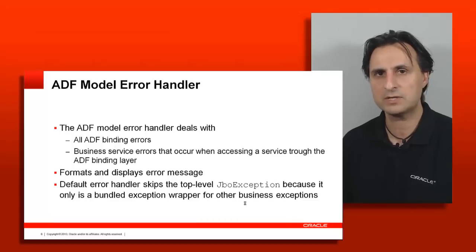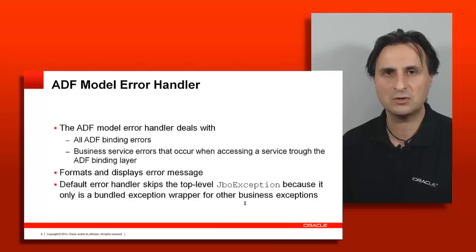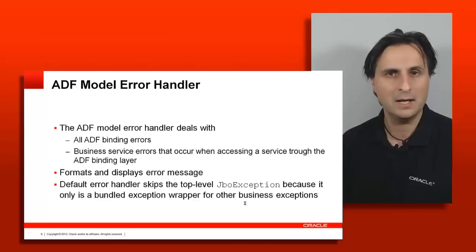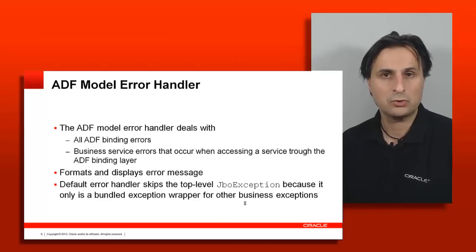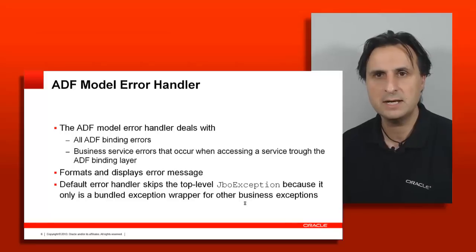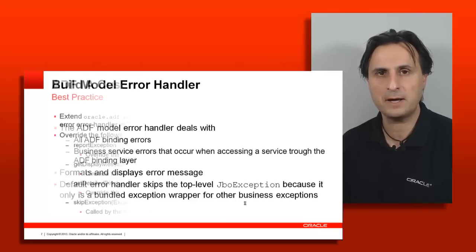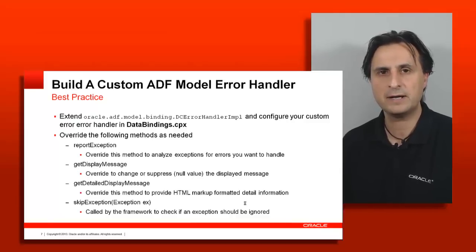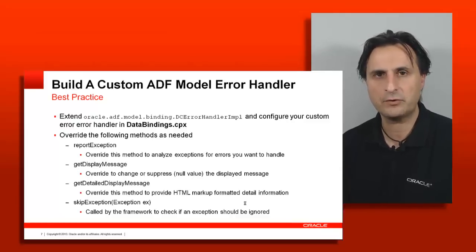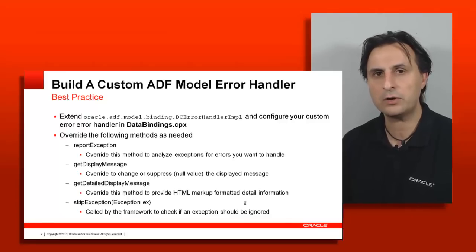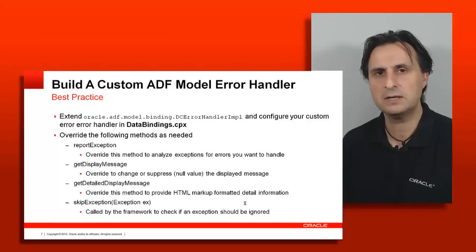That means if you have 100 validation errors, it won't ask you to click OK 100 times — it gives you all 100 exceptions in one bundle, and then the exception handler can parse it and show only the ones the user might be interested in. To create your own exception handler, you override the Oracle default class that ADF provides — that is the DCErrorHandlerImpl. That's the default file whose behavior the framework is determined by. If you create a custom version extending that class, you have several methods you can override, such as reportException to suppress an error or handle it differently, log it, or create incident reports.